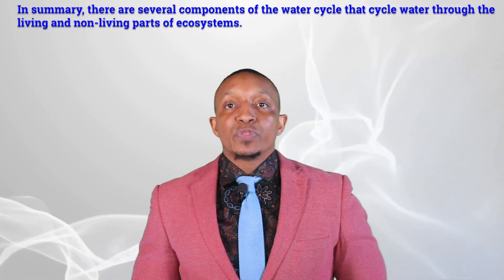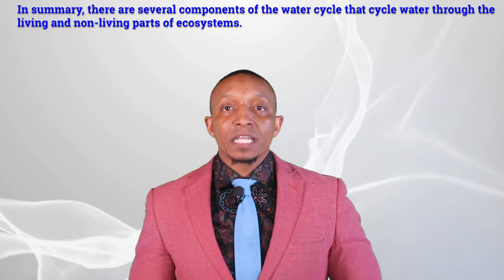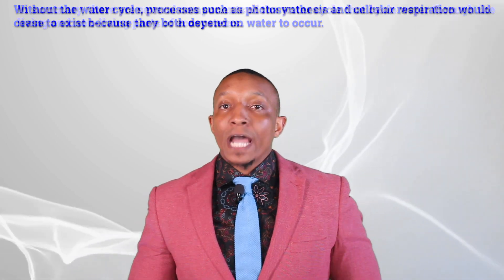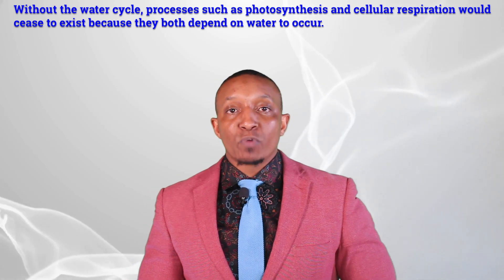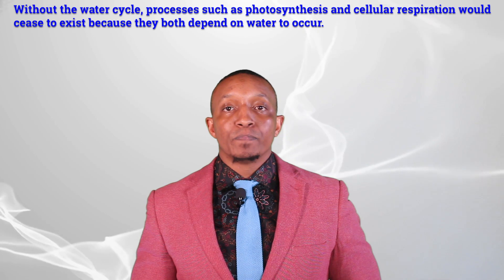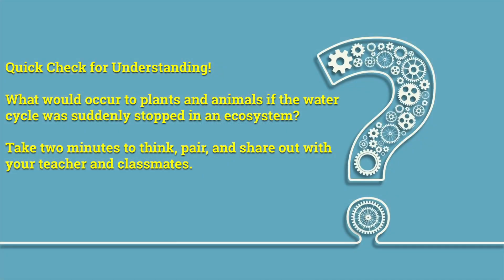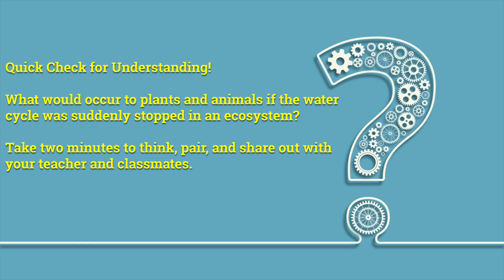In summary, there are several components of the water cycle that cycle through the living and non-living parts of ecosystems. Without the water cycle, processes such as photosynthesis and cellular respiration would cease to exist because they both depend on water to occur. Quick question: what would occur to plants and animals if the water cycle was suddenly stopped in an ecosystem? Take two minutes to think, pair, and share out with your teacher and classmates. We're ready to hear all of your brilliant responses.